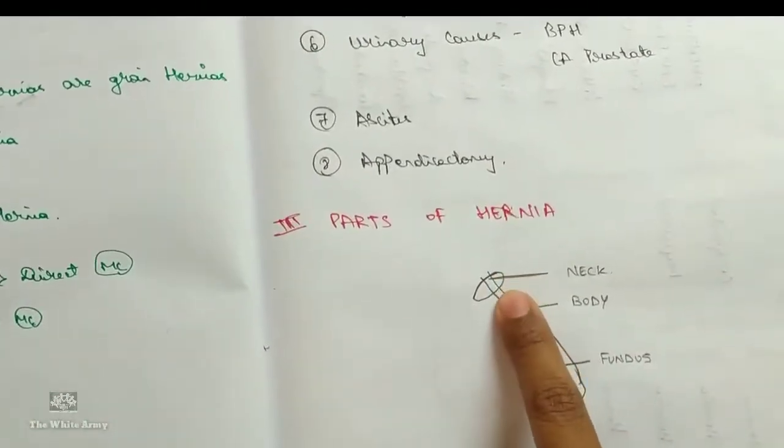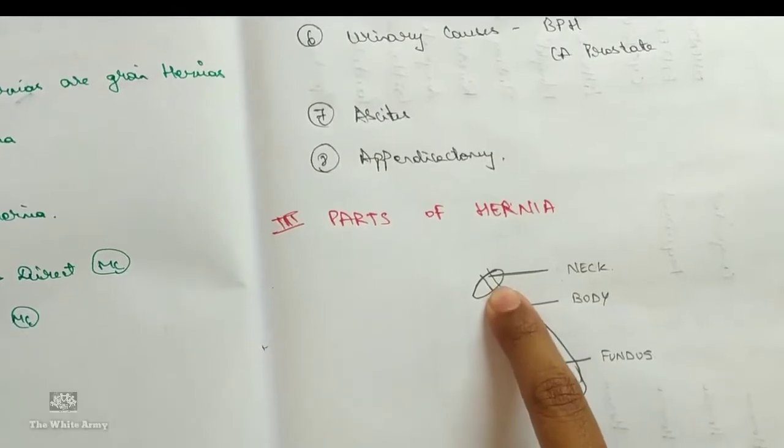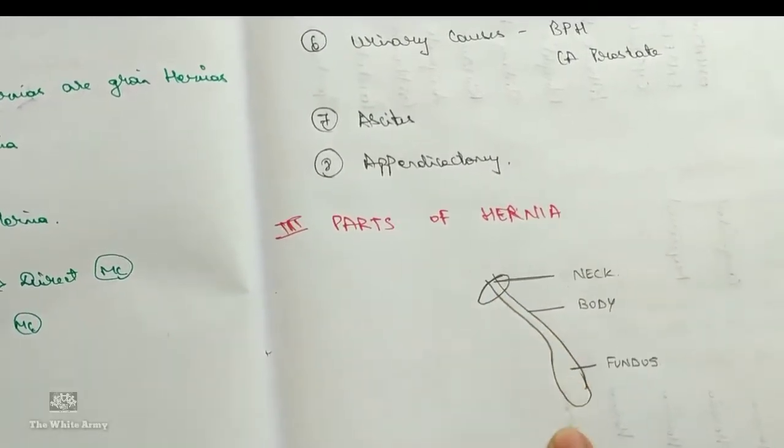Parts of hernia: this is the neck, narrowest part, body and fundus.